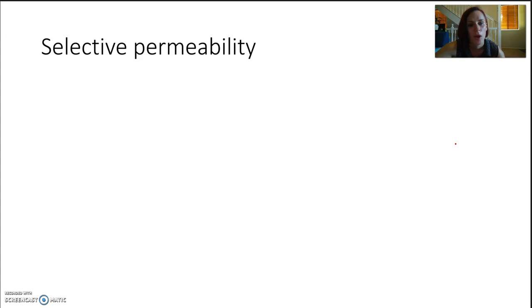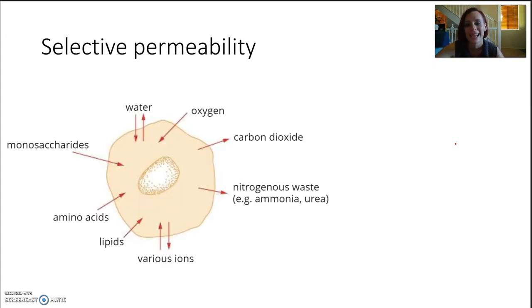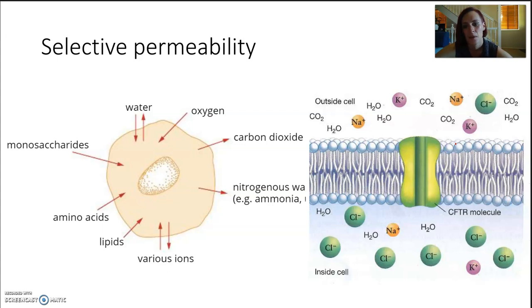The selective permeability of the membrane allows a cell to function in exactly how it needs to and perform those basic tasks and get its basic requirements for life. So it must gain some nutrients and expel waste as well. But that selective permeability means that it's in charge of what's coming in and when it's coming in and in what quantities.